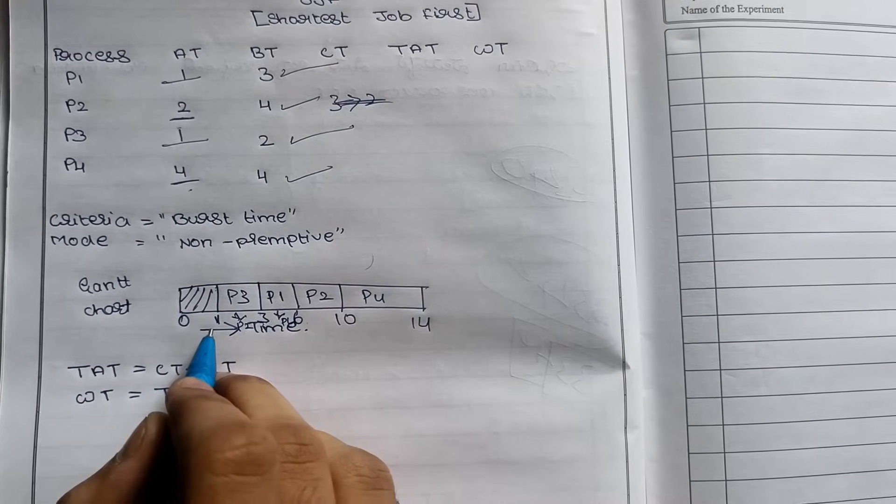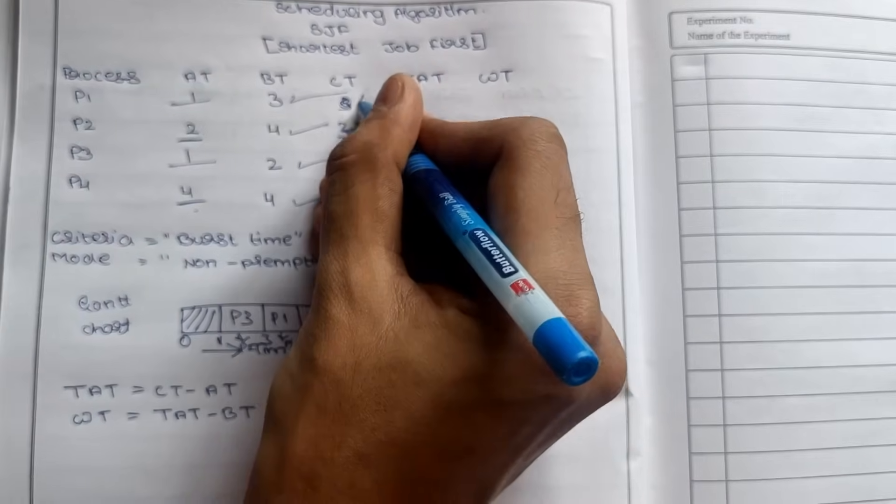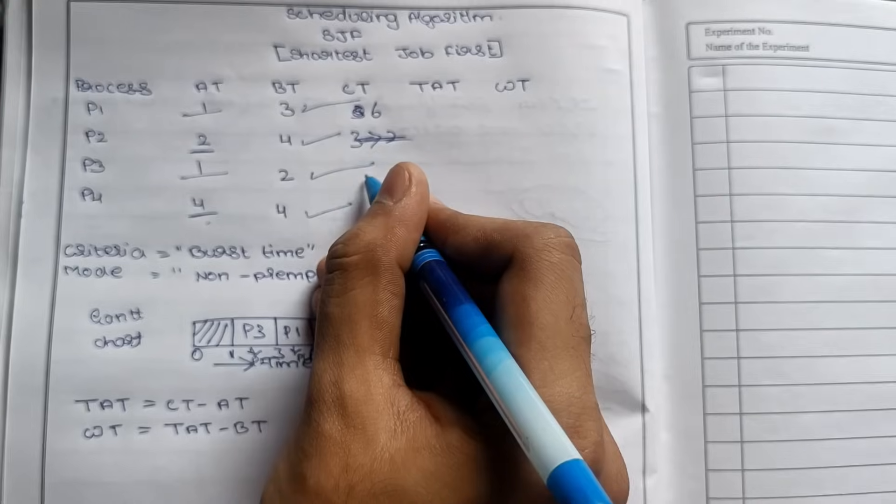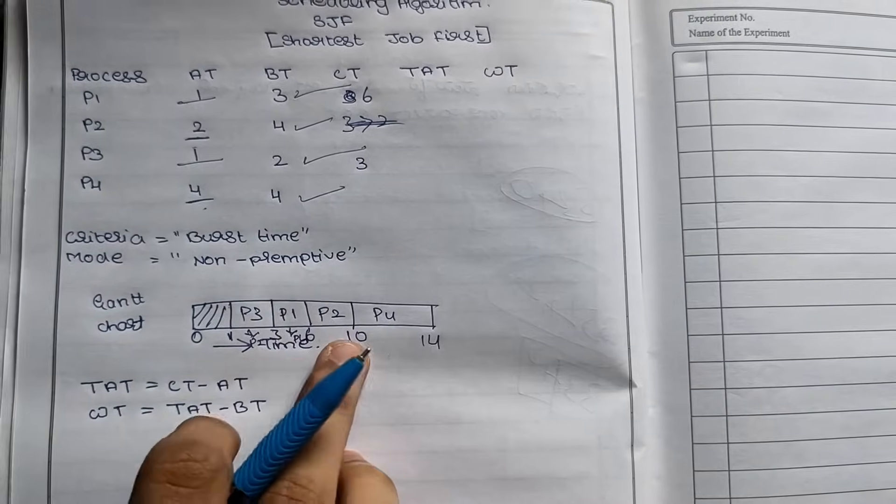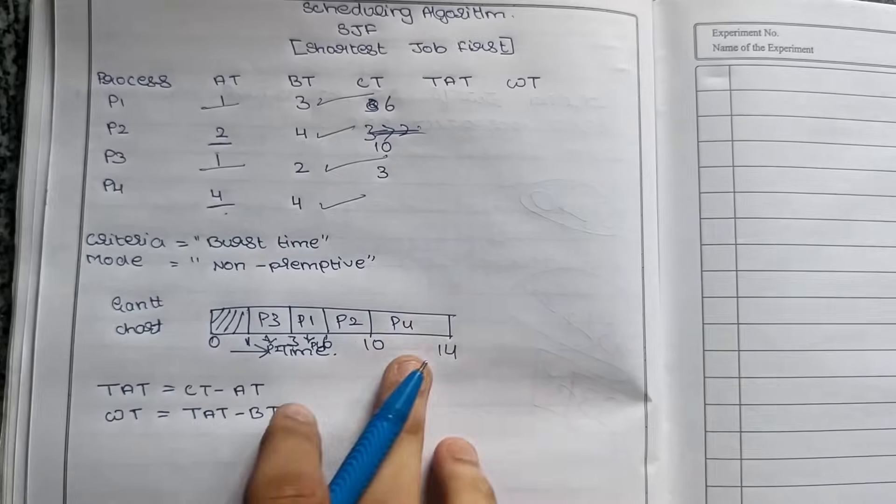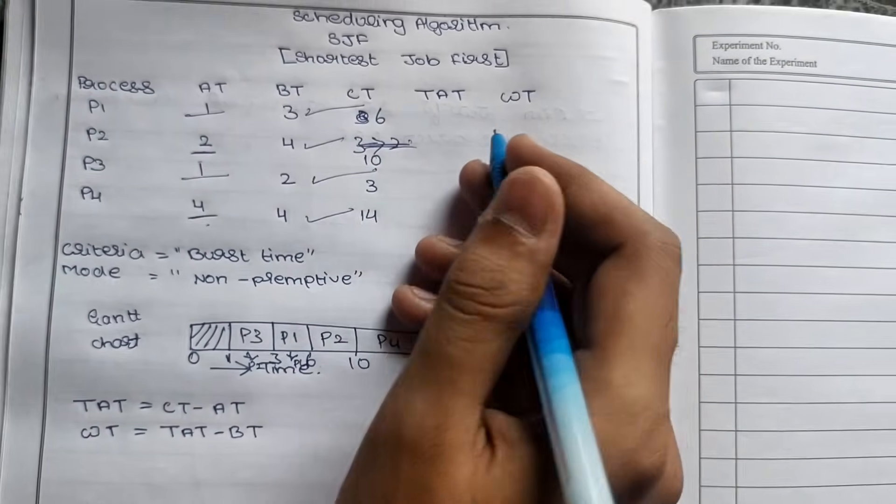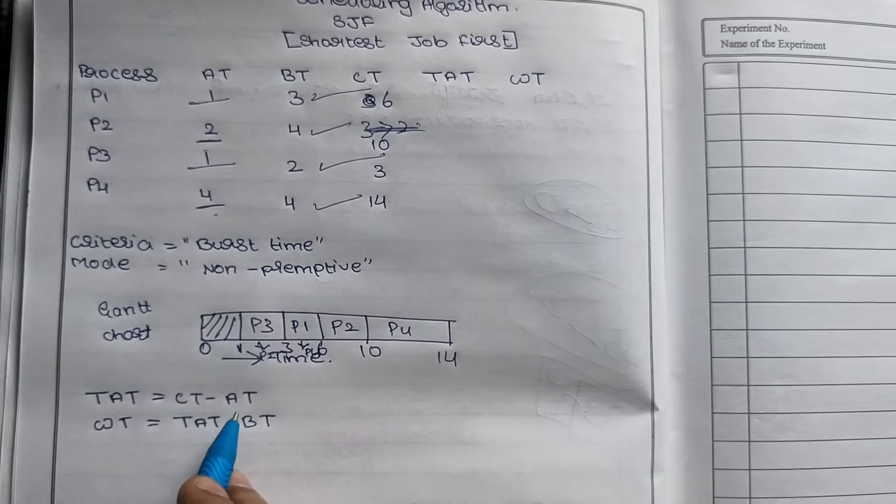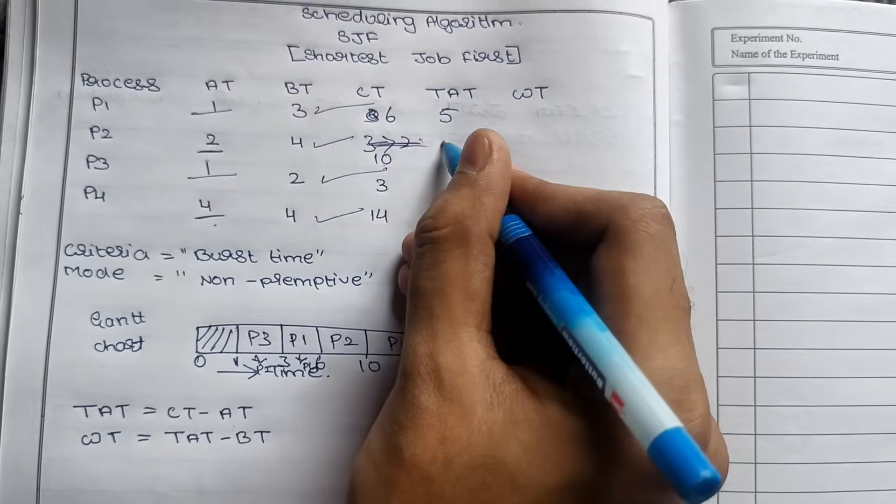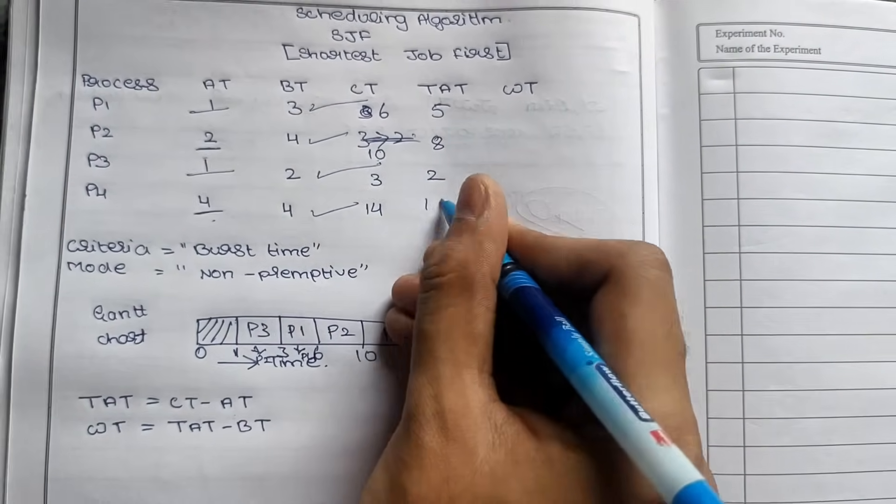As usual, we calculate completion time for each process. We write when each process completes: P3 completes at 3, P1 at 6, P2 at 10, and P4 at 14. Then turnaround time as usual: CT minus AT, completion time minus arrival time. 6 minus 1 is 5, 10 minus 2 is 8, 3 minus 1 is 2, and 14 minus 4 is 10.